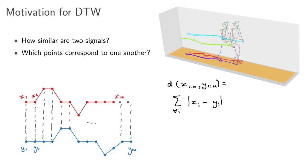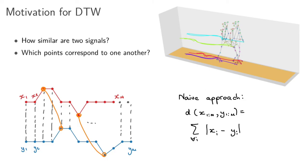But what's the problem with this approach? If the two signals are basically delayed relative to each other, this naive point-by-point comparison means we're never actually comparing corresponding bumps to each other. Maybe a single point on the red curve corresponds to multiple points on the blue curve, or the blue signal has been stretched out. What we actually want to do is compare this point here to that corresponding point there — and that's not what the naive approach does. But that's exactly what dynamic time warping allows us to do.